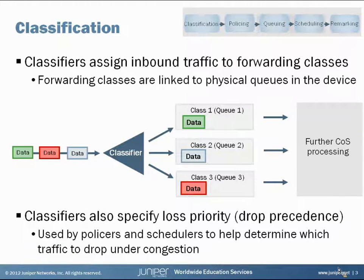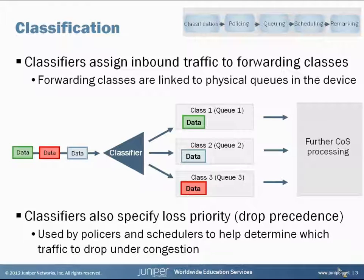Forwarding classes are linked to physical queues in the device. You might hear the idea of incoming traffic being sorted into queues — that's effectively the same thing. When we talk in terms of configuration we think of forwarding classes, but they are linked together. You can see the diagram in the middle: data coming into the device, hitting the classifier, and based on a variety of criteria split into the different classes or queues.